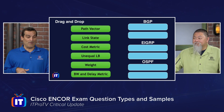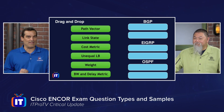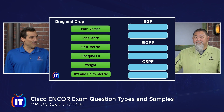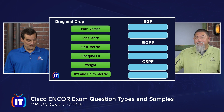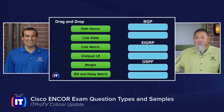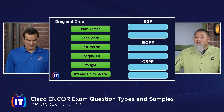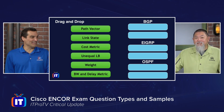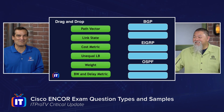On the CCNA exam you might get ten items on the left with some you won't use, so watch out for that scenario. For the drag and drop: path vector goes to BGP, link state goes to OSPF, cost metric goes to OSPF, unequal cost load balancing goes to EIGRP, weight goes to BGP, and bandwidth and delay metric goes to EIGRP. Ronnie nailed them all.